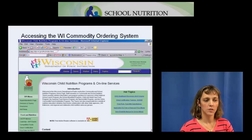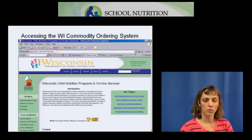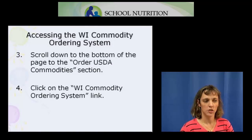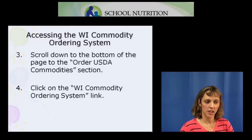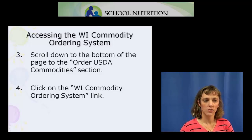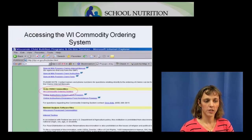You first go to the Wisconsin Child Nutrition Programs and Online Services page. After you're there, scroll to the bottom of the page and find the Order USDA Commodities section, which is highlighted in yellow. Once you find that section, click on the first link below it, which says Wisconsin Commodity Ordering System.